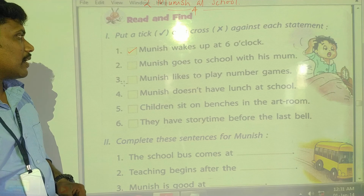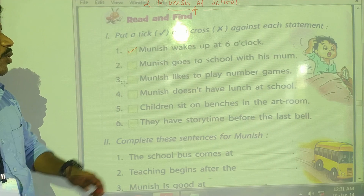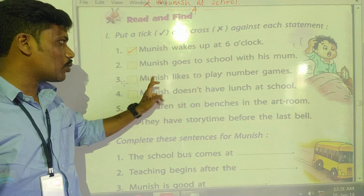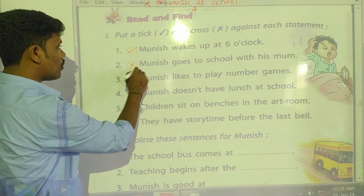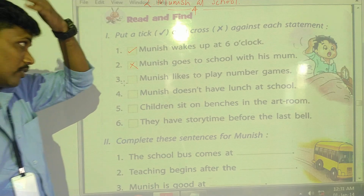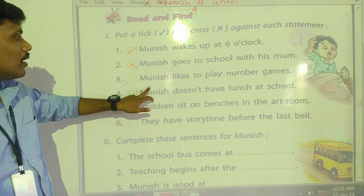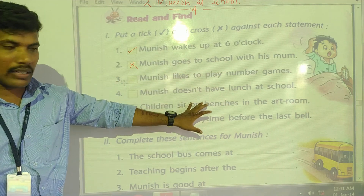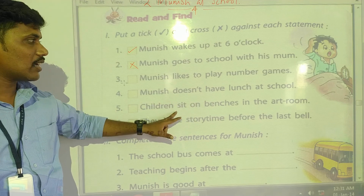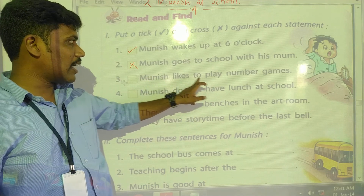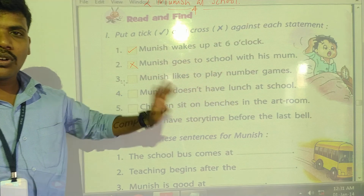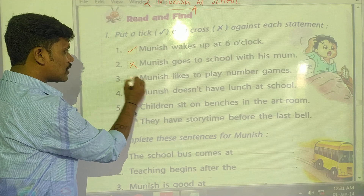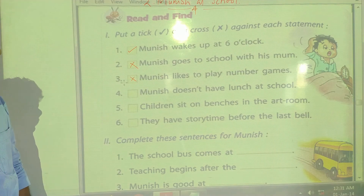This is a correct statement. Second one: Munish goes to school with his mom. He is going to school with his mother? No, he is not going to school with his mother — he is going alone. Third: Munish likes to play number games. Have you read the sentence 'Munish likes to play number games'? No — he likes to play chasing games. So the third statement is also wrong.